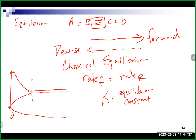The only thing that can change the numerical value of the equilibrium constant is changing the temperature. If you leave the temperature the same, the ratio of products to reactants will always equal the same value for that reaction. This is sometimes hard to understand, especially when you do experiments starting with different amounts of reactants and products.